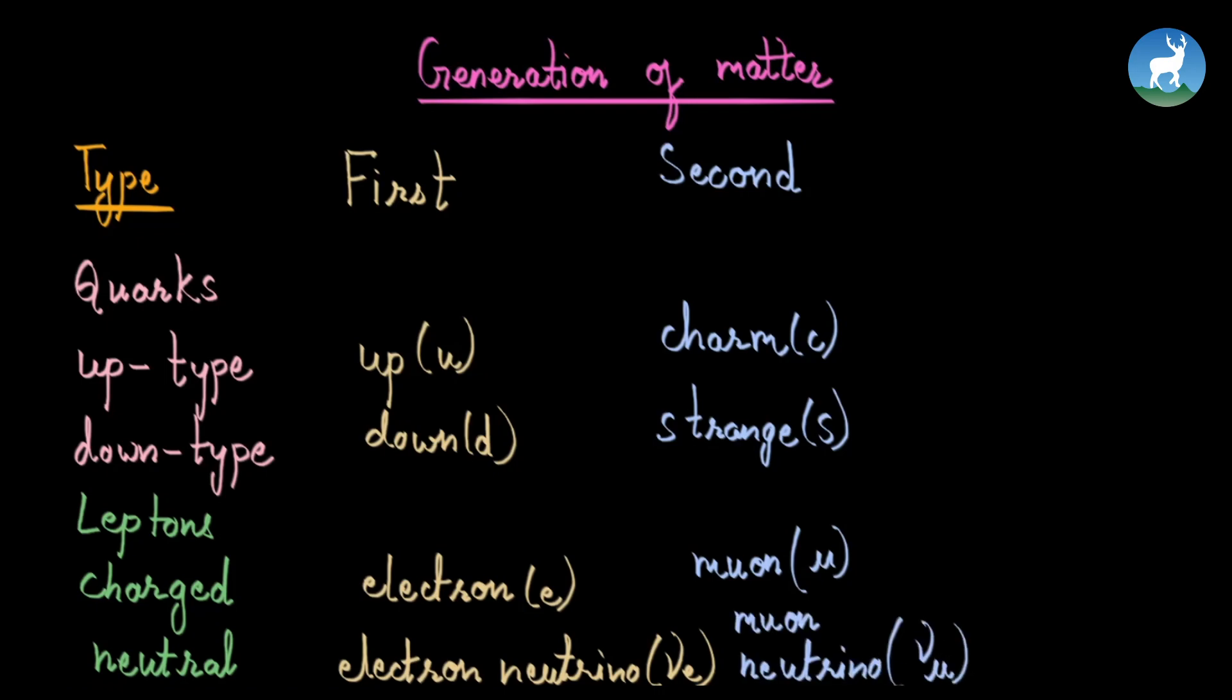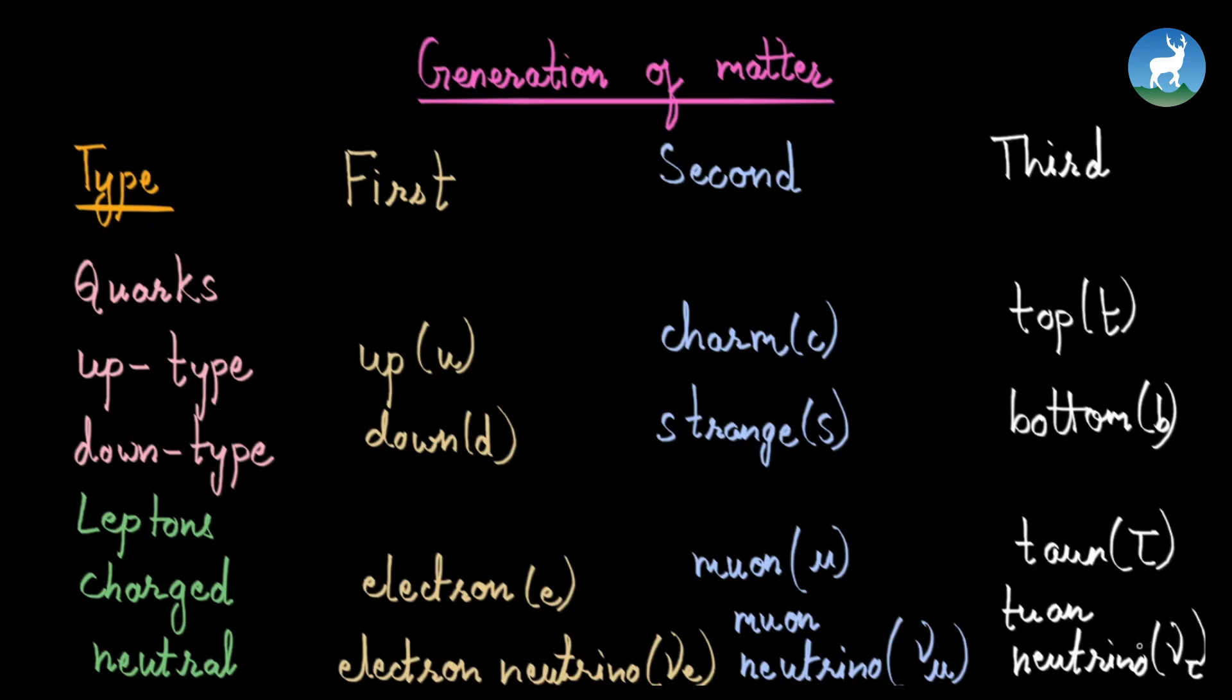Third generation of quarks: top quark and bottom quark. Third generation leptons: tau and tau neutrino.